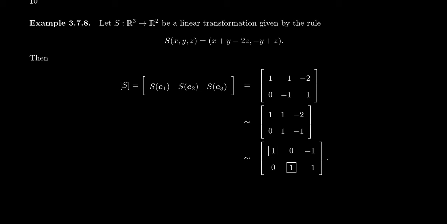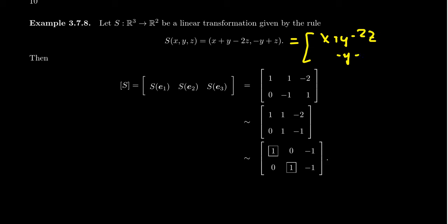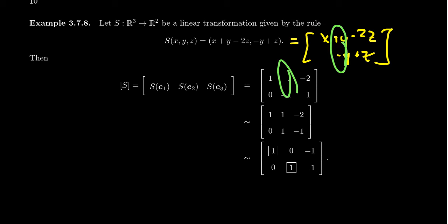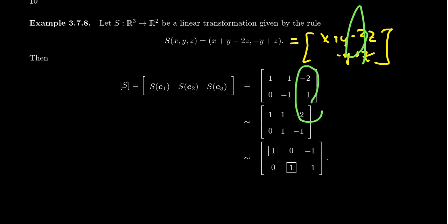Let's look at another example. Take S from R³ to R², with the formula S(x,y,z) = (x+y−2z, −y+z). Written as a column vector, this is x+y−2z in the first coordinate and −y+z in the second. Reading off the matrix representation by columns: the x-column gives (1, 0), the y-column gives (1, −1), and the z-column gives (−2, 1).